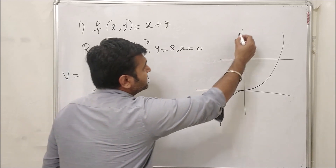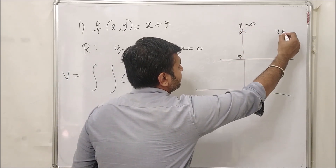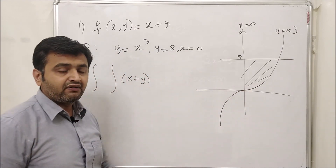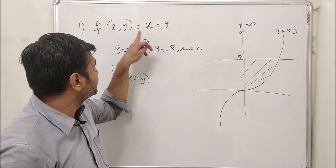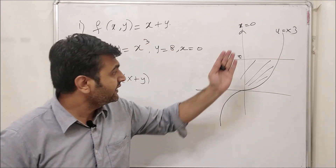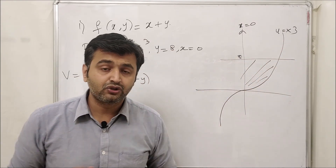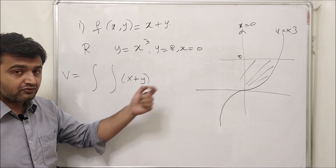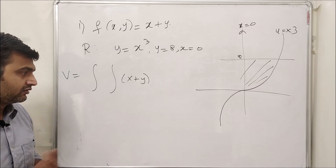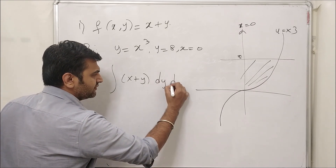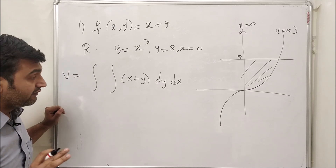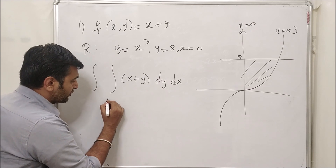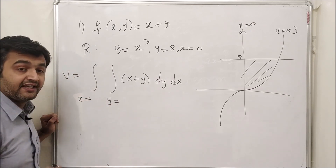So the bounded region is the area enclosed by x = 0, y = 8, and y = x³. Whatever surface you have — say z = x + y — the volume below this surface and above this region is what we want to find. To do this, we integrate f(x,y) dA over R. I need to choose the order of integration, so let's first go with dy dx, and then we'll also do dx dy.